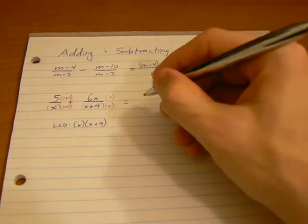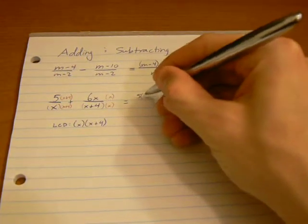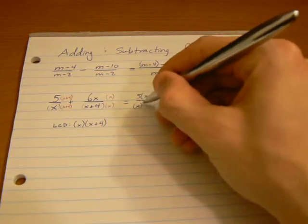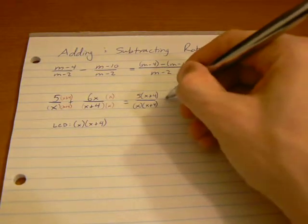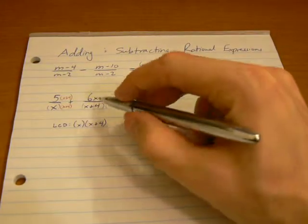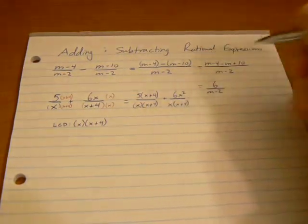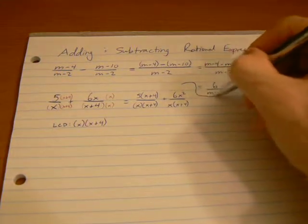And this one has x plus 4, so I need to multiply this by x. Now, when I rewrite this, I'm going to have 5 times x plus 4 over x times x plus 4 plus 6x squared, multiplying the 6x and the x, over x times x plus 4. Draw a line here just to keep that separate.